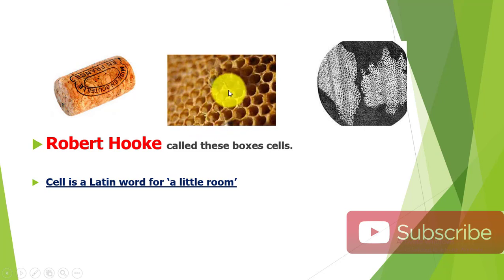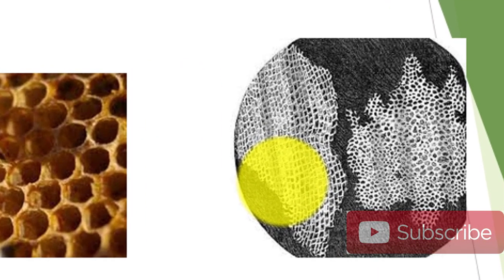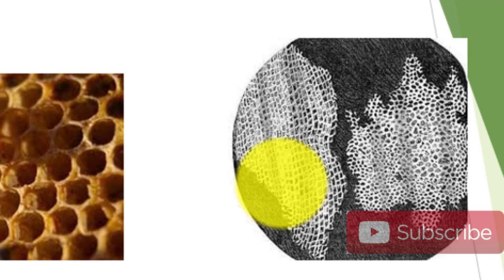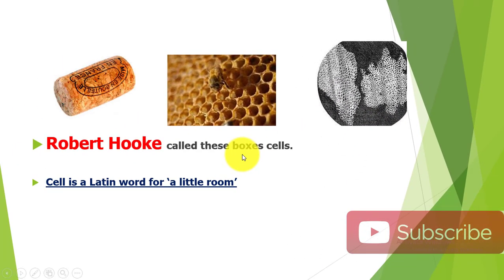There were small compartments within the cork, and this was the first time in the history of science that such structures were observed. Robert Hooke called these box-like structures 'cells'. The word cell comes from the Latin word for a little room.